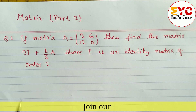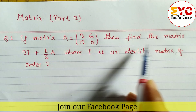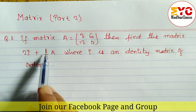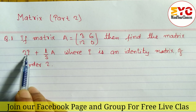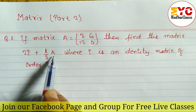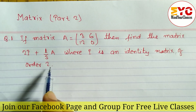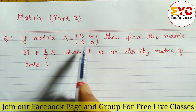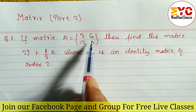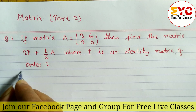Question number one: if matrix A is equal to [[3, 6], [12, 0]], find the matrix 2I + (1/3)A, where I is an identity matrix. Since matrix A is of order 2×2, the identity matrix should also be a 2×2 matrix.